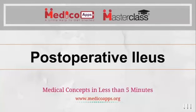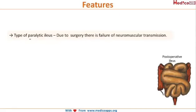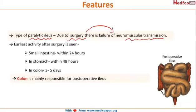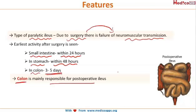The next condition is post-operative ileus, which is a type of paralytic ileus occurring due to surgery. Surgery causes failure of neuromuscular transmission, leading to impaired peristaltic waves. The earliest activity seen after surgery is in the small intestine within 24 hours, in the stomach within 48 hours, and the colon takes 3 to 5 days. The colon is mainly responsible for post-operative ileus, and this has been asked in the exam.